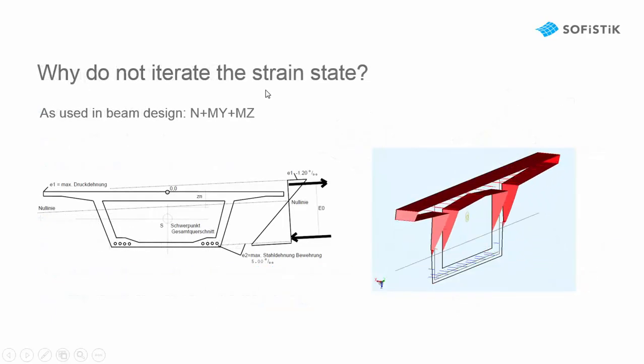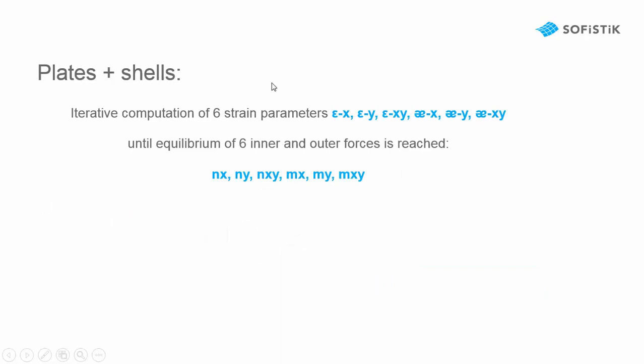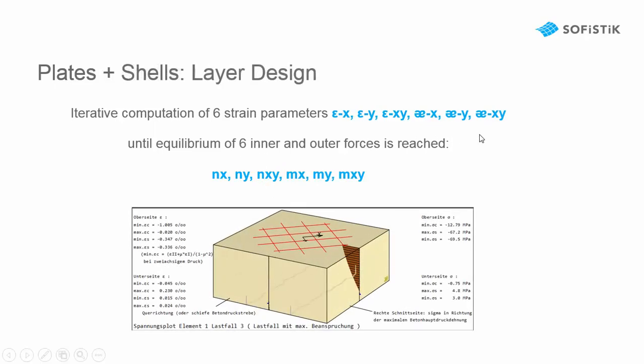So why not iterate for shells in the same manner as we do it for beam elements? We see it here on the right. The iteration gives a very precise result of the strain. It would be necessary to take the six strain parameters. Three strains and three curvatures. And to find equilibrium of the six inner forces and the outer forces.